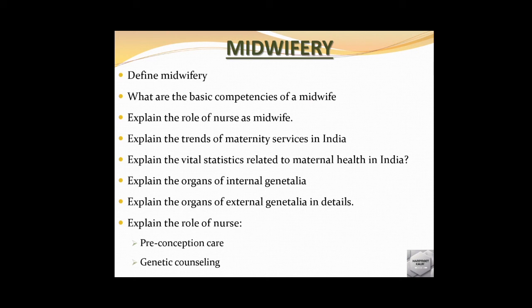Next, explain the organs of internal genitalia and external genitalia in detail. You should know all the organs — internal and external. Questions can be asked about vagina, fallopian tubes, cervix, uterus, mons pubis, labia minora, and labia majora. You should be ready to write about any of these organs and also draw a diagram.